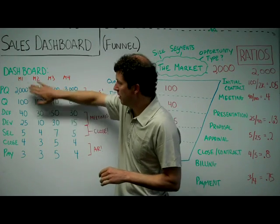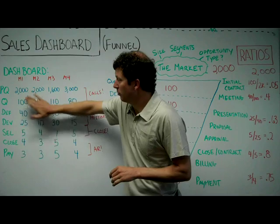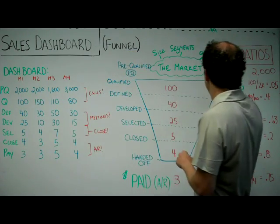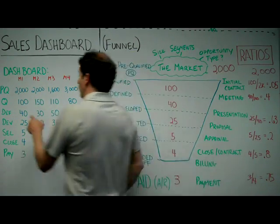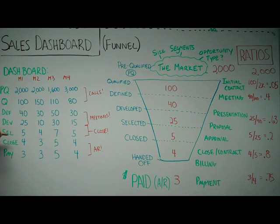So let's look at the first month. We've got 2,000 people pre-qualified. A hundred of them, if you remember, have had initial contact.